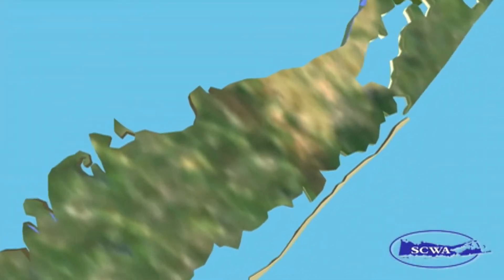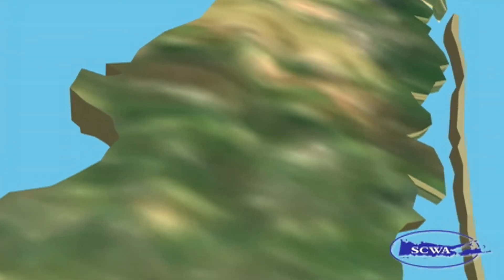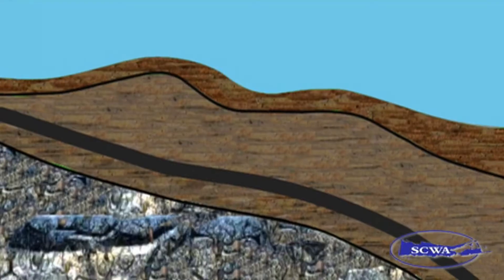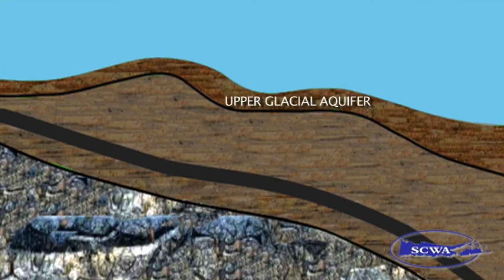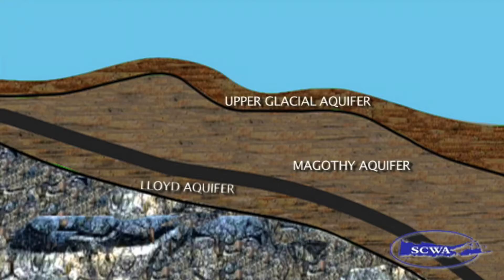There are three main aquifers found throughout Long Island. The shallowest is the upper glacial, the middle one is the Magothy, and the deepest is the Lloyd Aquifer. It can take anywhere from 10 to 30 years for water to reach the upper glacial aquifer, as much as 500 years to reach the Magothy, and upwards of several thousand years to reach the Lloyd.